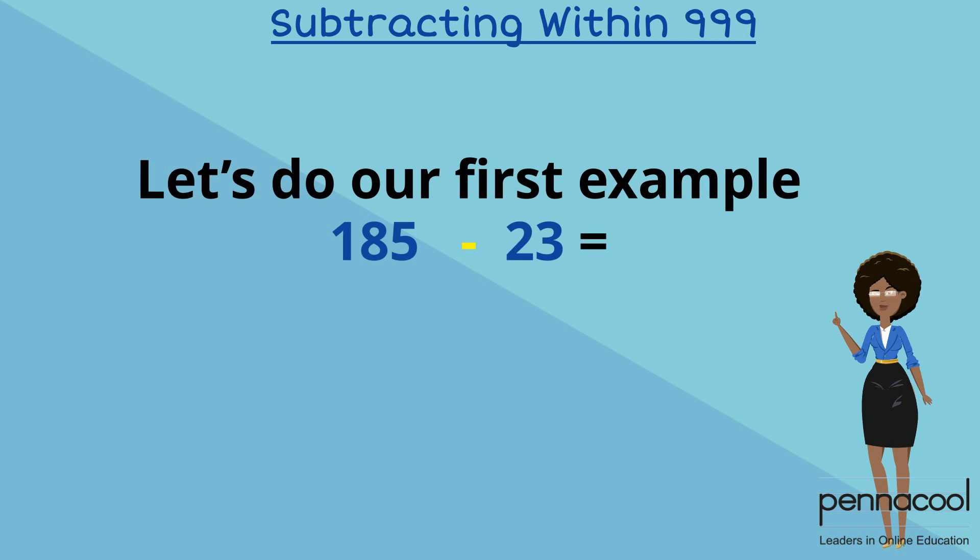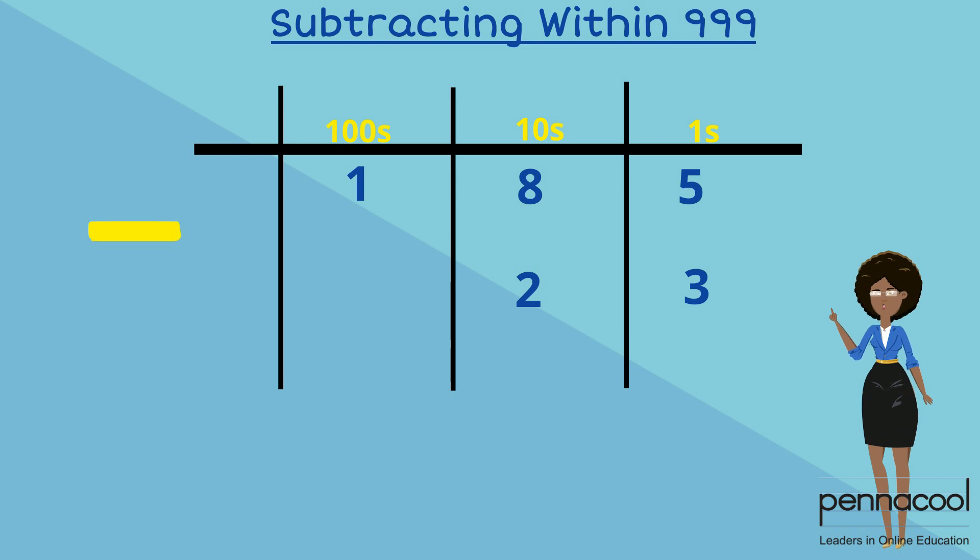Let's do our first example: 185 take away 23. Let's put our number sentence into our place value chart and start to subtract from our ones column.